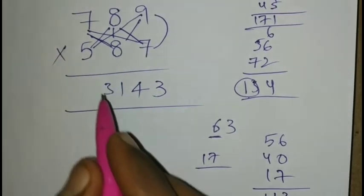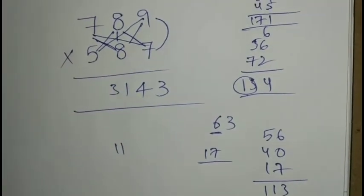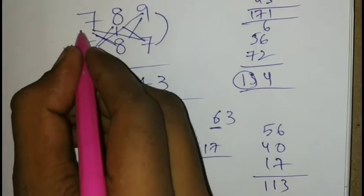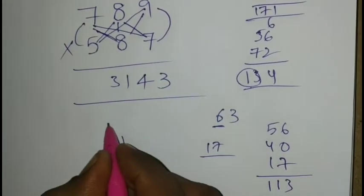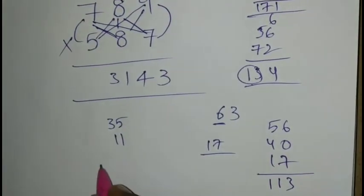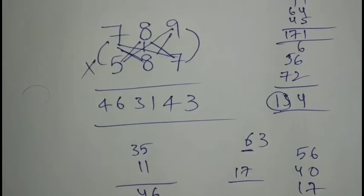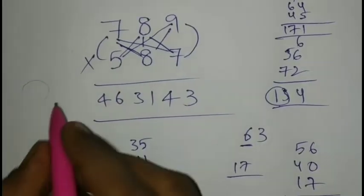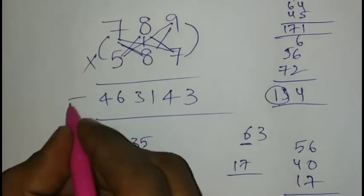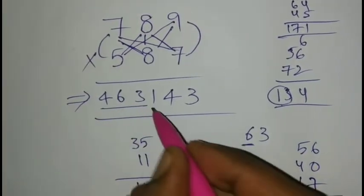Next to final friends, next last step. 7, 5 is 35, 11 carry is 46. 46. Friends, now answer is 463,143.